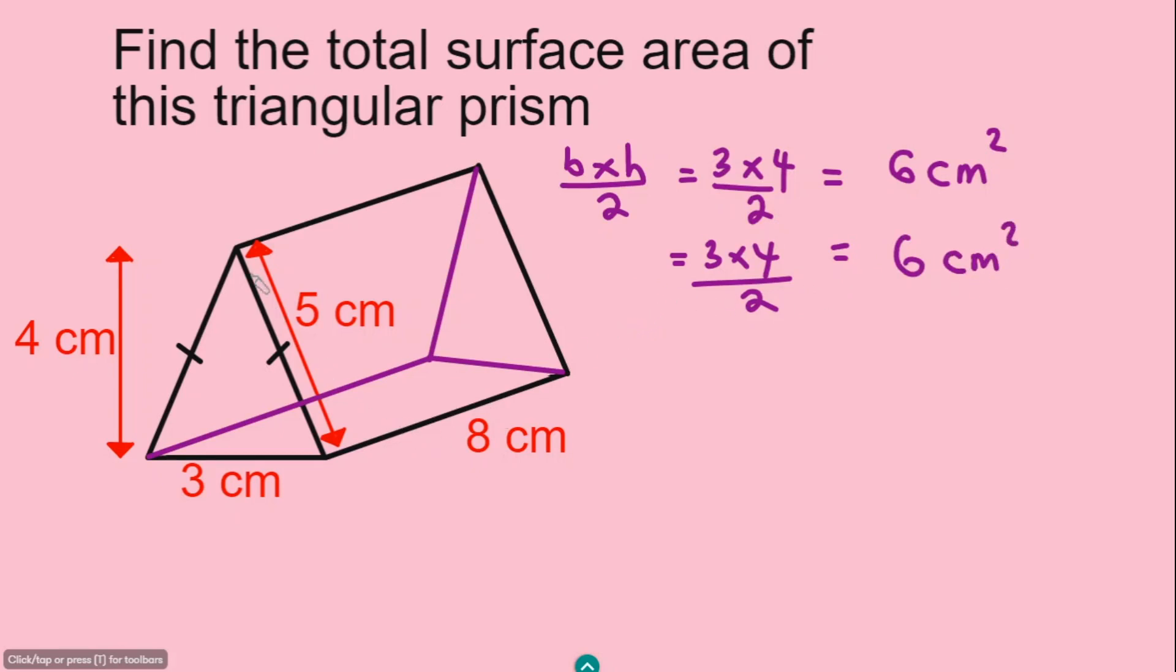Next, we find the area of this rectangle here in the front. The dimensions are given: the length is 8 and the width is 5. So the area for this rectangle on the front is the length times the width, which is 8 multiplied by 5, and that's going to give you 40 cm squared.